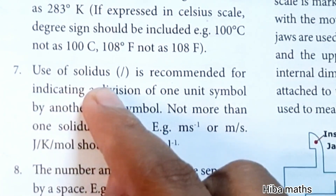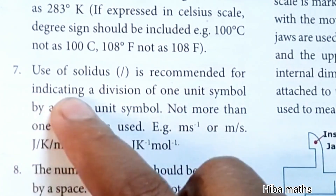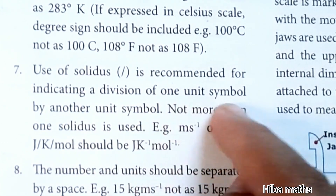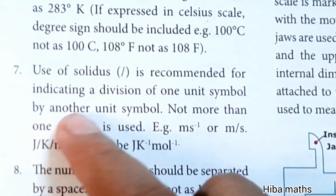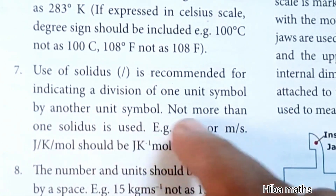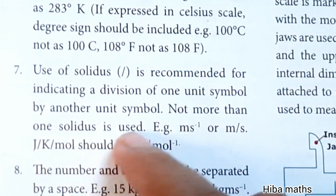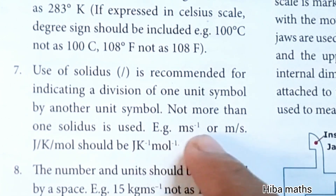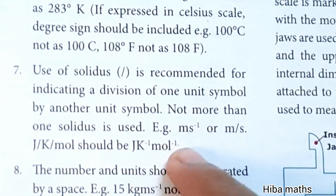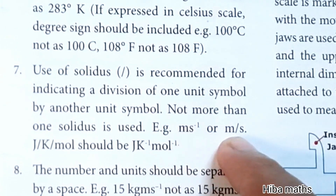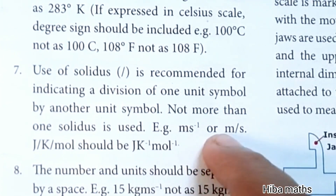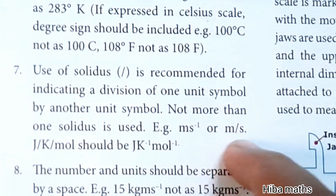Seventh point: use of solidus (slash) is recommended for indicating a division of one unit symbol by another unit symbol. Not more than one solidus is used. Example: meter per second is written as m/s. That means m, solidus, s.